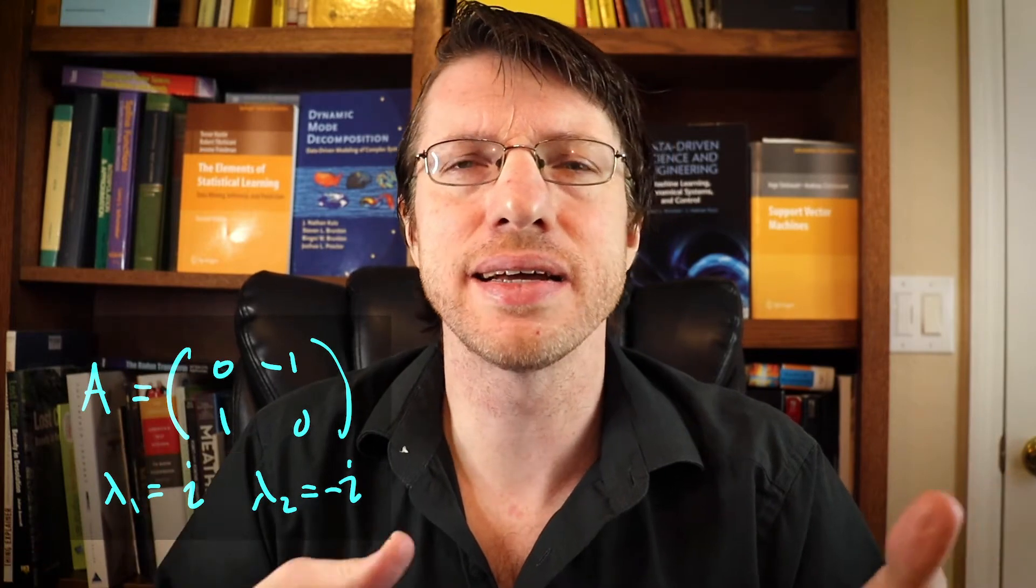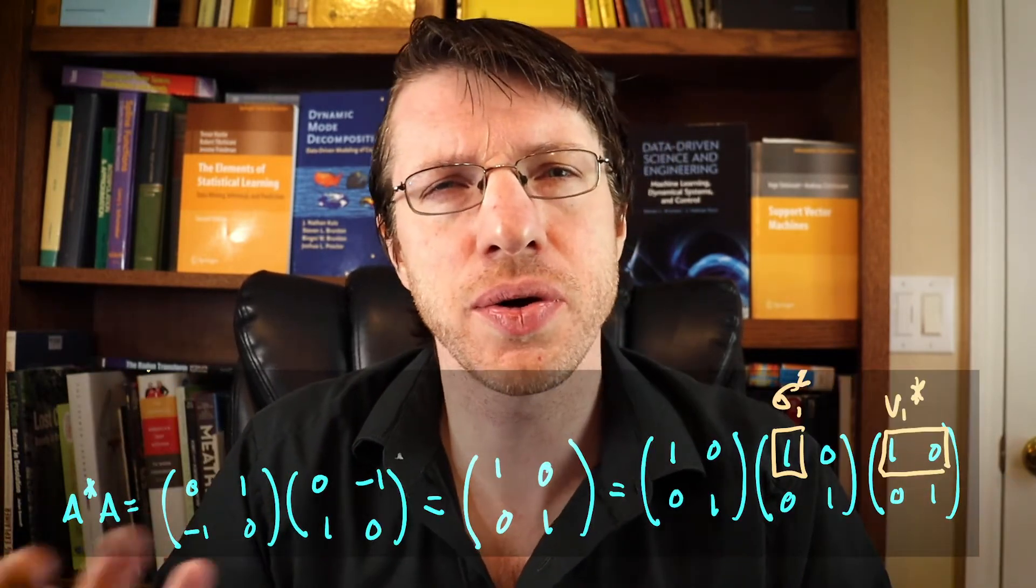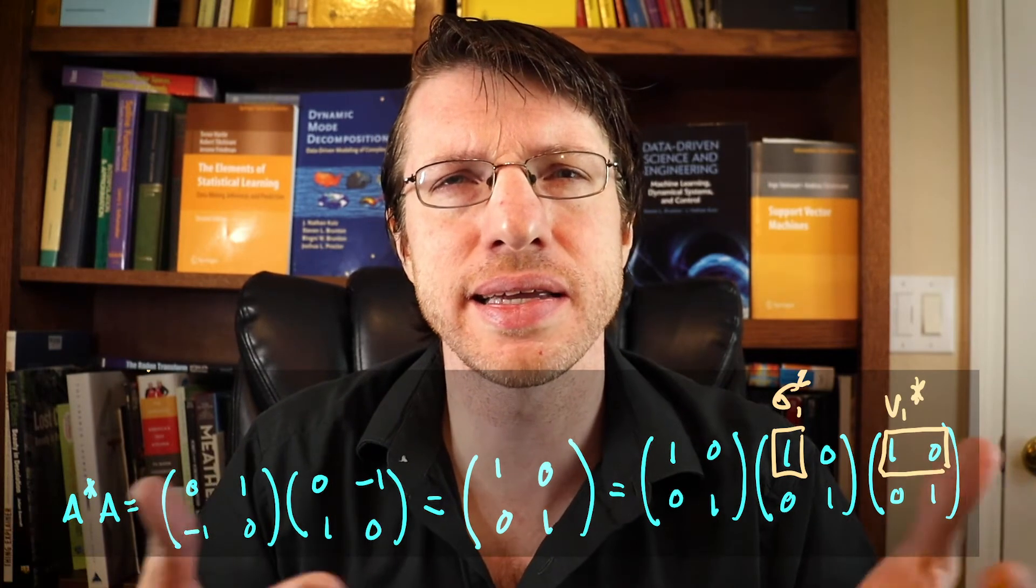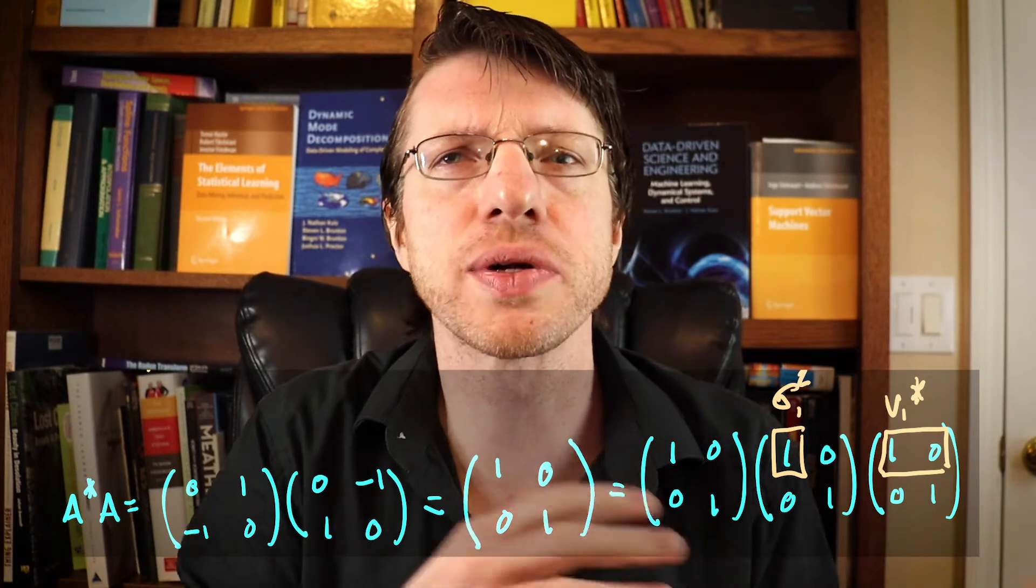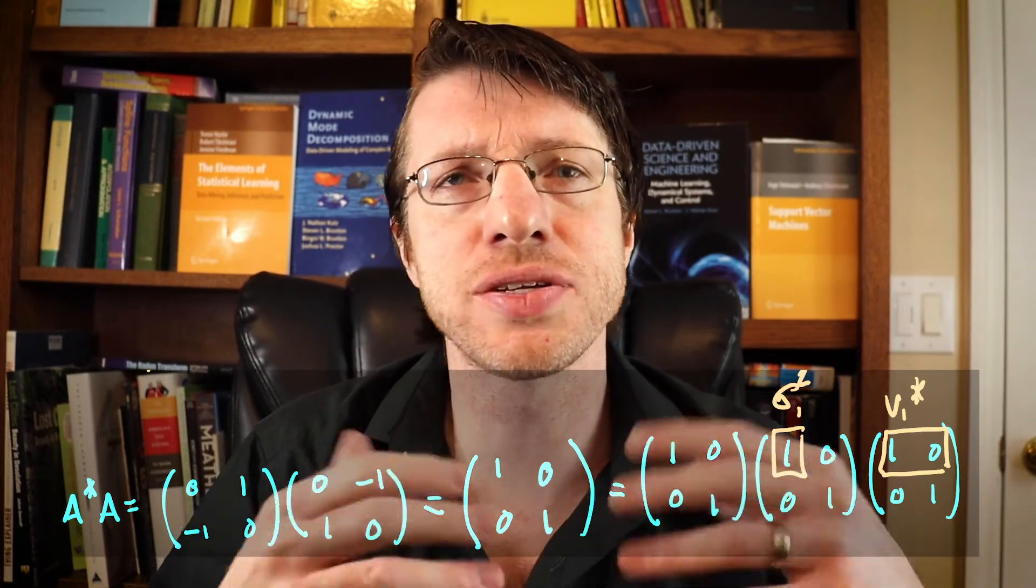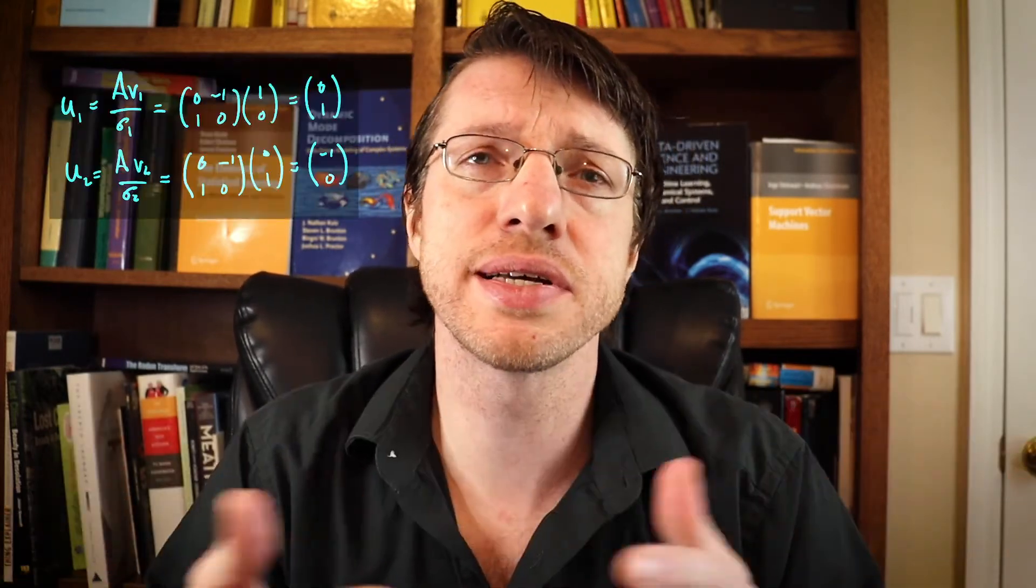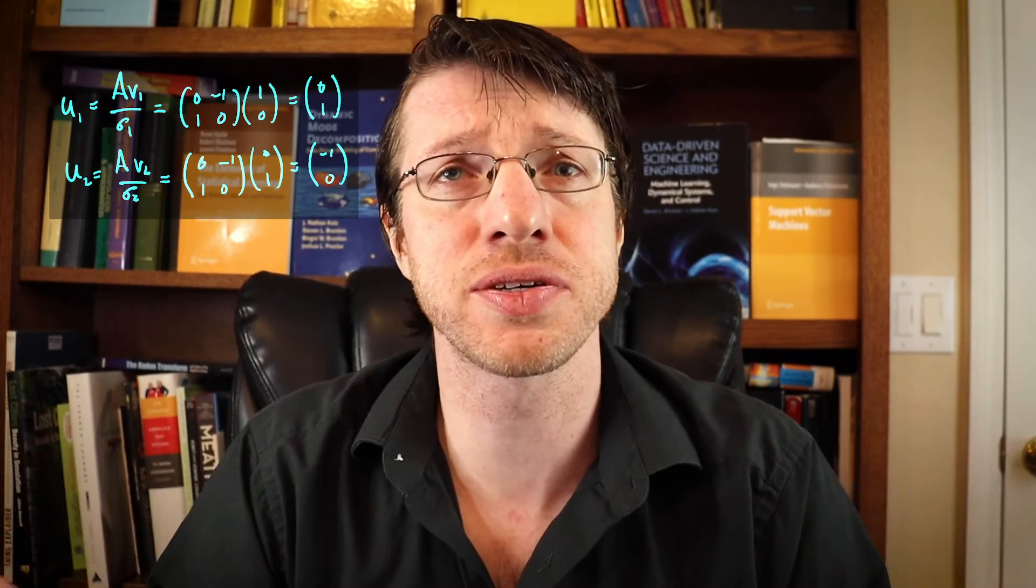So then how do you end up getting a decomposition for a matrix that you know has complex roots, even if it's square and you have a eigen decomposition for it? What is the relationship between these two? And so the trick here is that u and v don't have to be the same vectors. For an eigenvalue decomposition, they do.